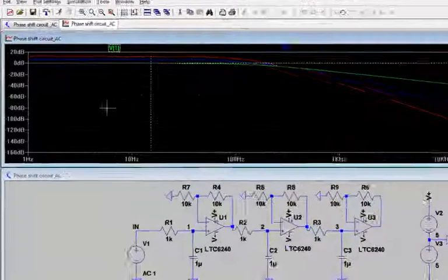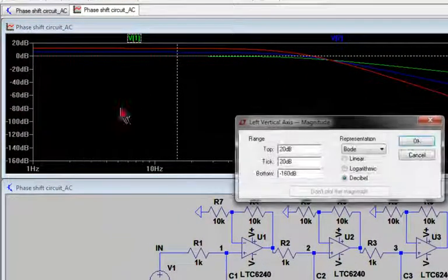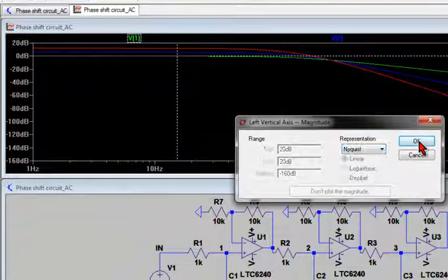In the same way as before, left-click on the dB axis, and from the drop-down menu select Nyquist.